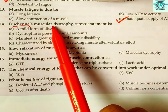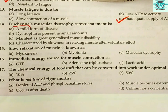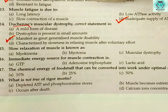Number fourteen: Duchenne's muscular dystrophy — the correct statement is (a) mild form of disease, (b) dystrophin is present in small amounts, (c) manifests as great generalized muscle disability, or (d) characterized by slowness in relaxing muscle after voluntary effort? The answer is (c): it manifests as great generalized muscle disability.